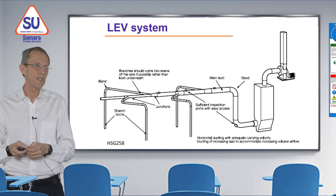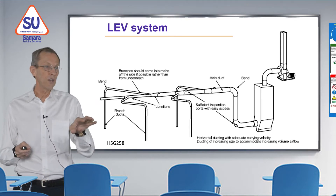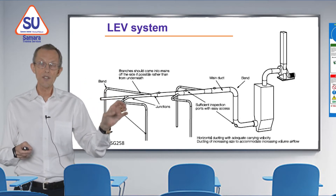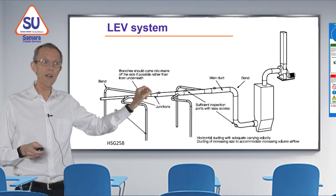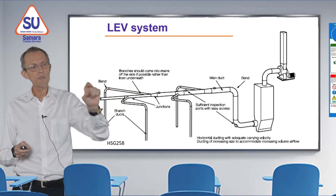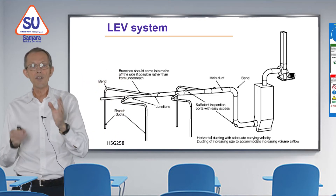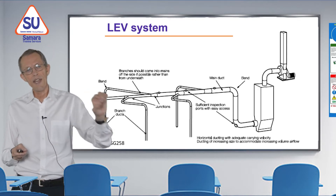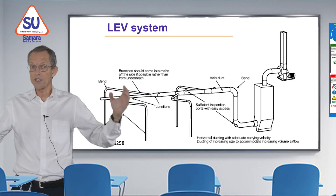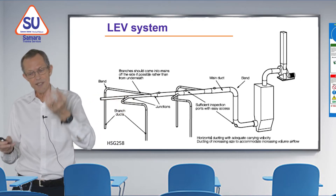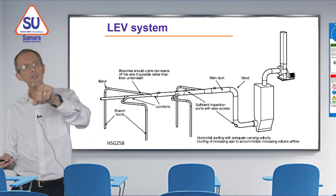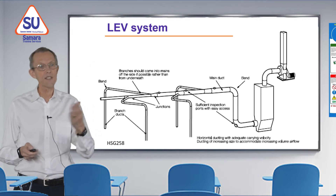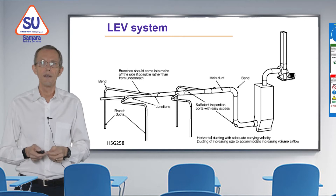A slightly more complicated system shows four different branches, each with hoods at the end of vertical pipes. The main pipe goes on to a bigger system, and all these pipes come down to the central duct and into the air cleaner. In this case it's not a filter — the air comes in at the bottom and rises slowly through a big pipe, so the dust settles at the bottom and the clean air goes through the air mover and is exhausted above the roof.